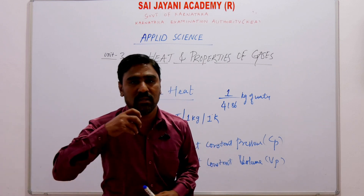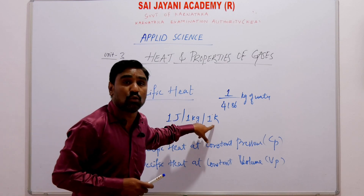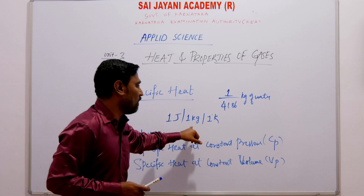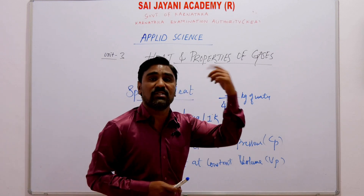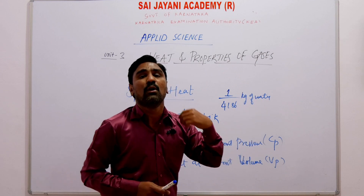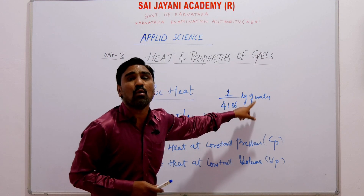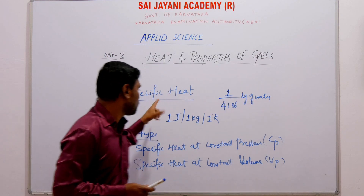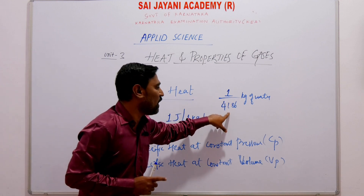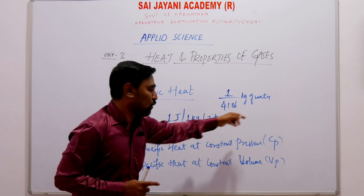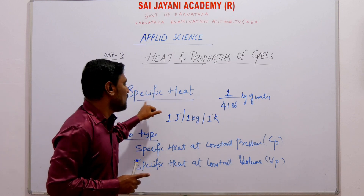Specific heat is the amount of heat required to raise 1 J for 1 kg of water through 1 degree Kelvin. That is called specific heat. For 0 J, it is 1 divided by 4186 kg of water through 1 degree Kelvin. That is specific heat.